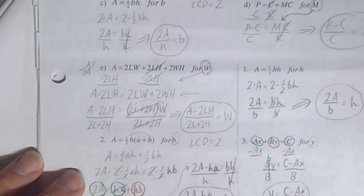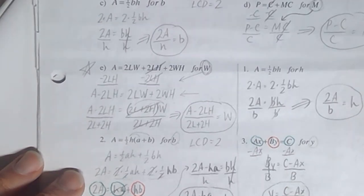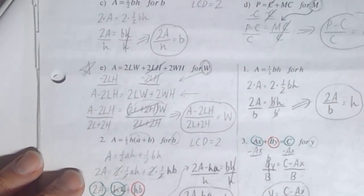What you've got to do is use the technique we learned before when you have two terms with a variable: once you get them on one side and all other terms on the other side, you factor out the variable and then divide out. Go ahead and try that. I'll show you the answer when you hit play again.